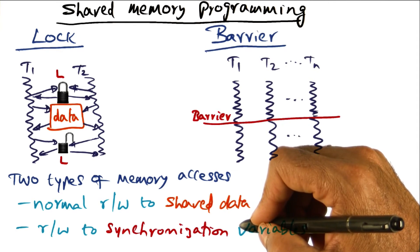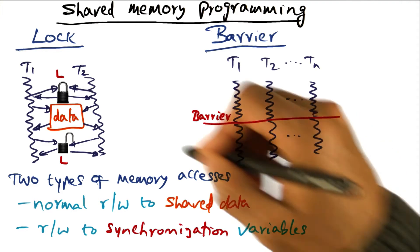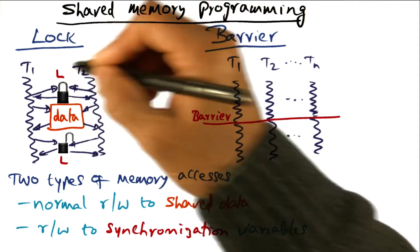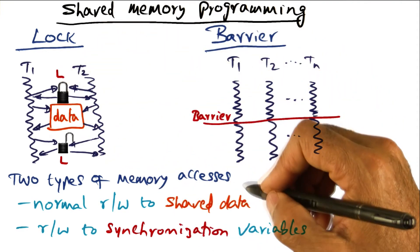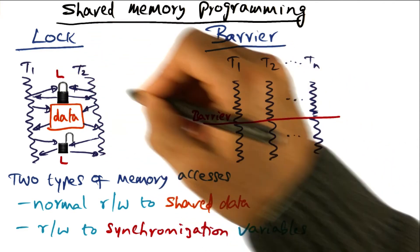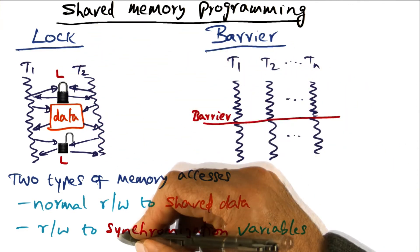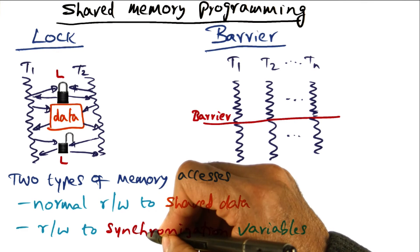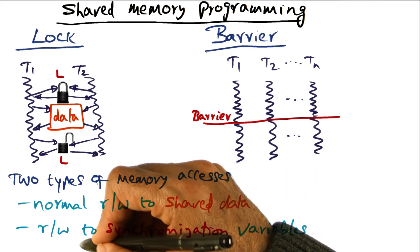It may be the operating system or it could be a user level threads library that is providing these mutual exclusion locks or barrier primitives. But in implementing those synchronization primitives, those algorithms are going to use reads and writes to shared memory.